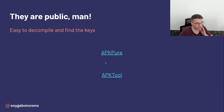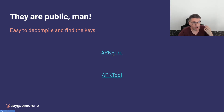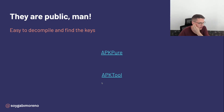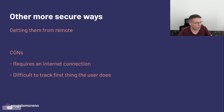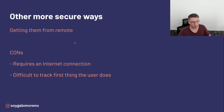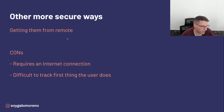For example, we can use a platform like APKPure to download the APK, and with a tool like APK tool you can decompile the APK very easily. We can secure our keys with more secure ways, for example getting them remotely from our backend, a Firebase Remote Config, or something equivalent.